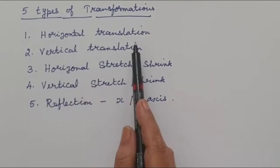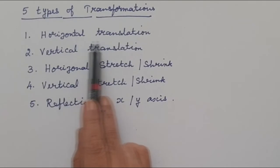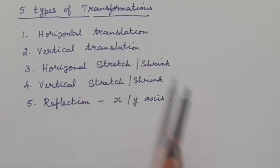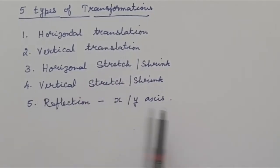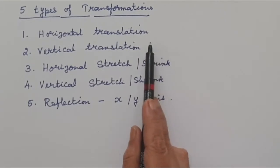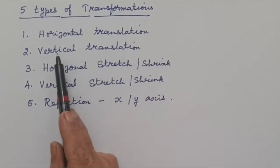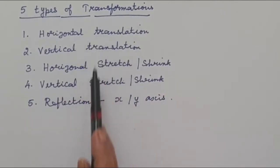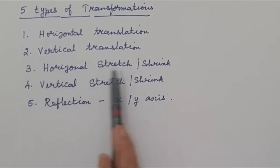Horizontal translation means there will not be any change in the graph — it will only be shifting the position horizontally, that means it will be shifting in the x direction. Vertical translation also moves up and down in the vertical direction.